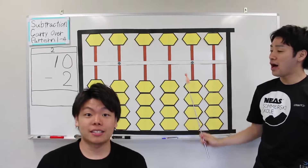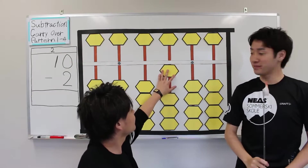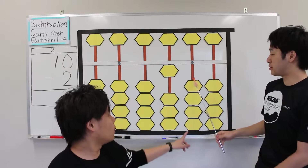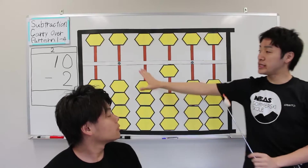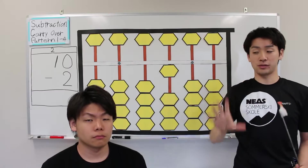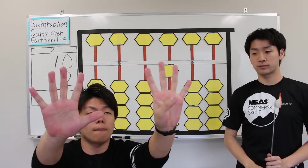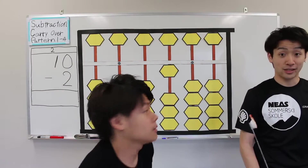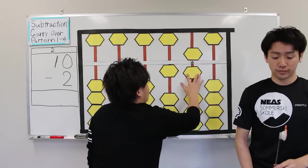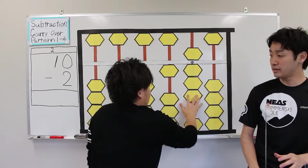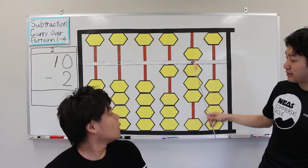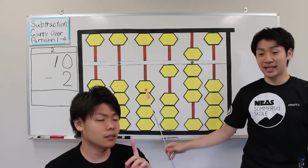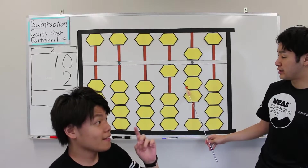First, plus 10. Next, minus 2. What is the answer? 10 minus 2 equals 8. Add 8. The number is 18, but the correct answer is 8. Subtract 10. That's right. The answer is 8.